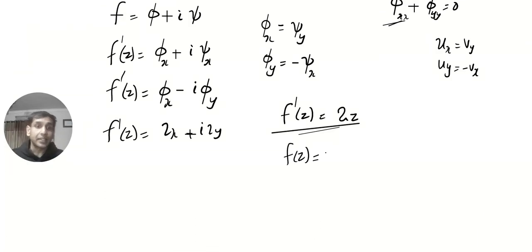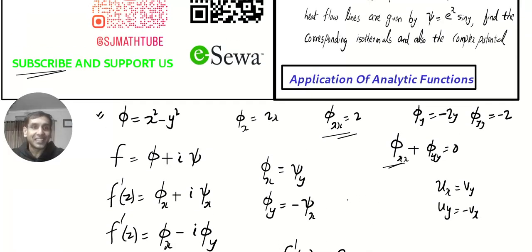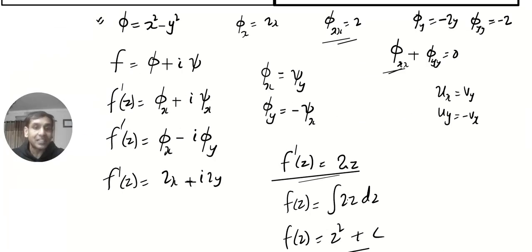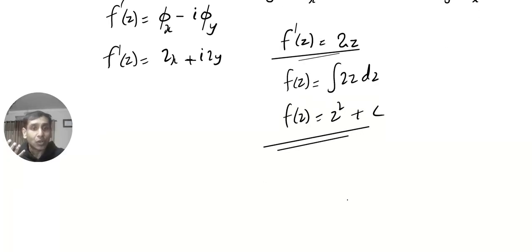Now, let's integrate. So, we get integral 2z dz. So, f(z) equal to z square plus c. Now, look at this. This is the complex potential. This is exactly what they asked. They might use a different name in a different application. But, that is exactly what they want.